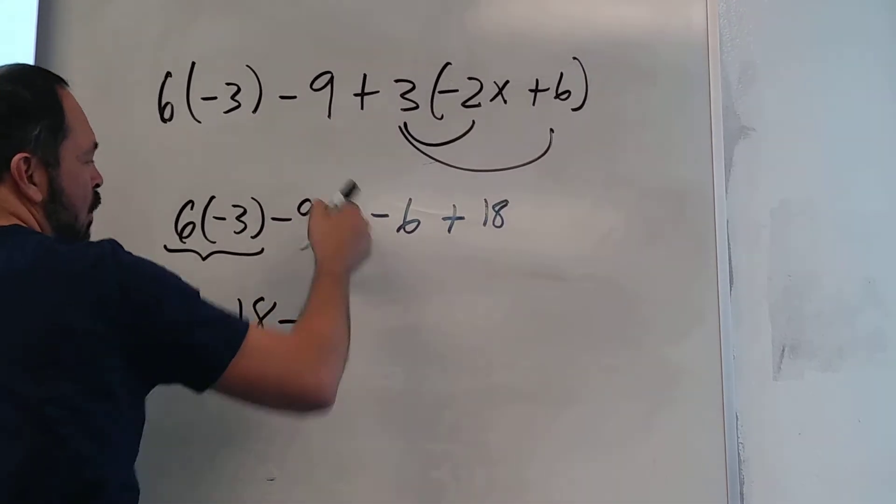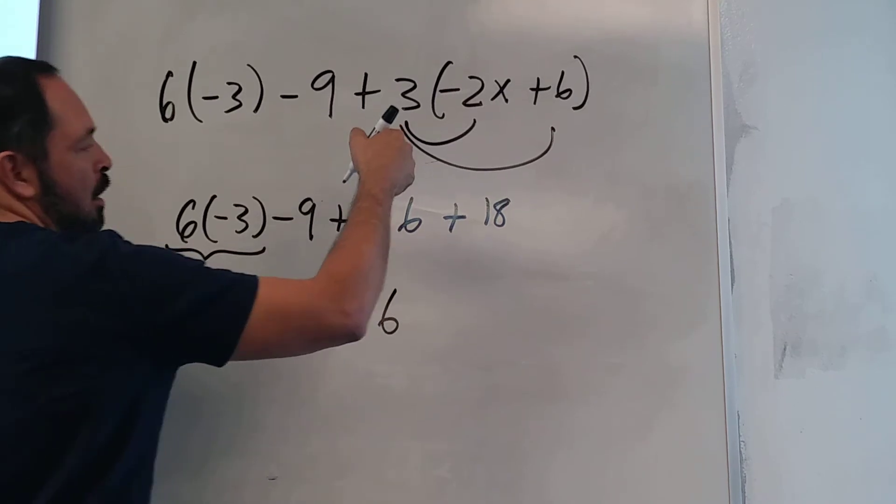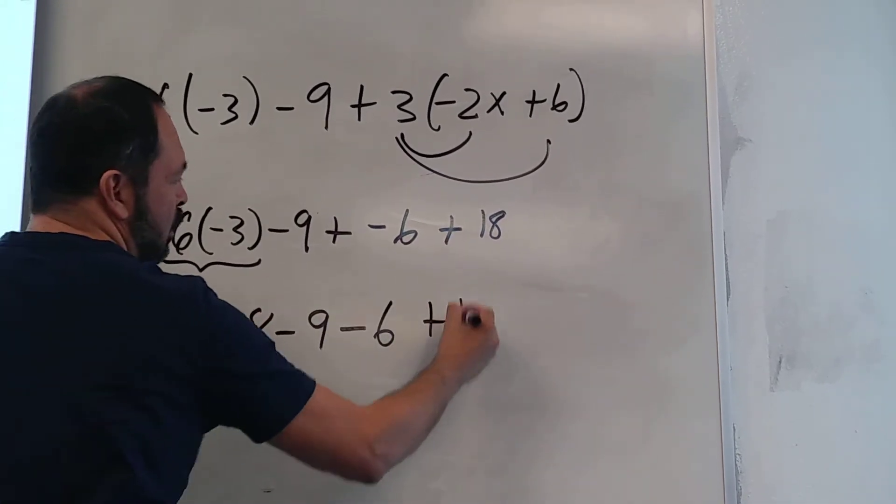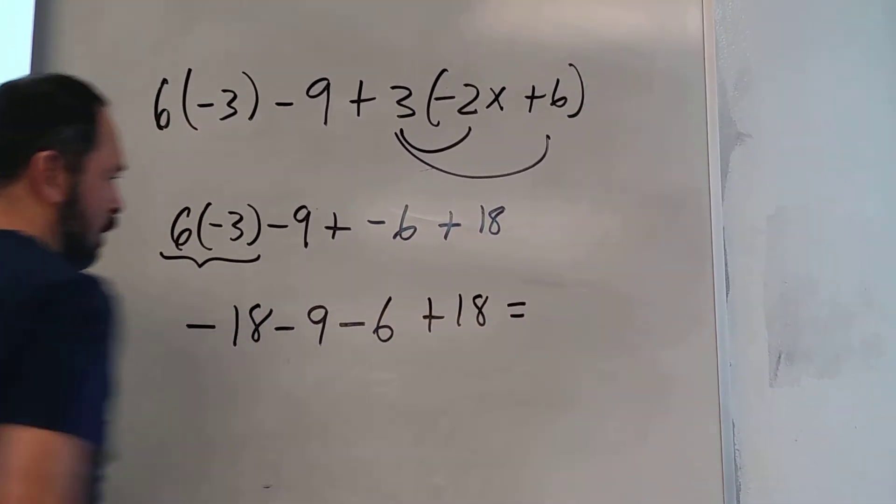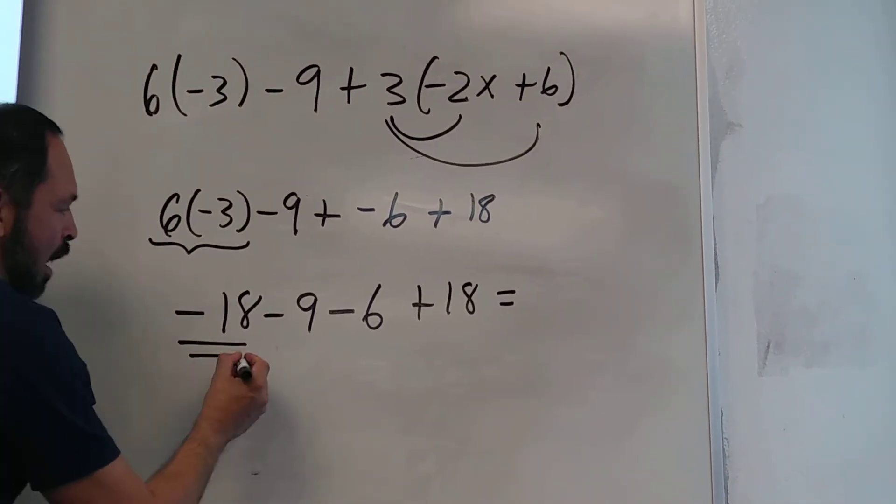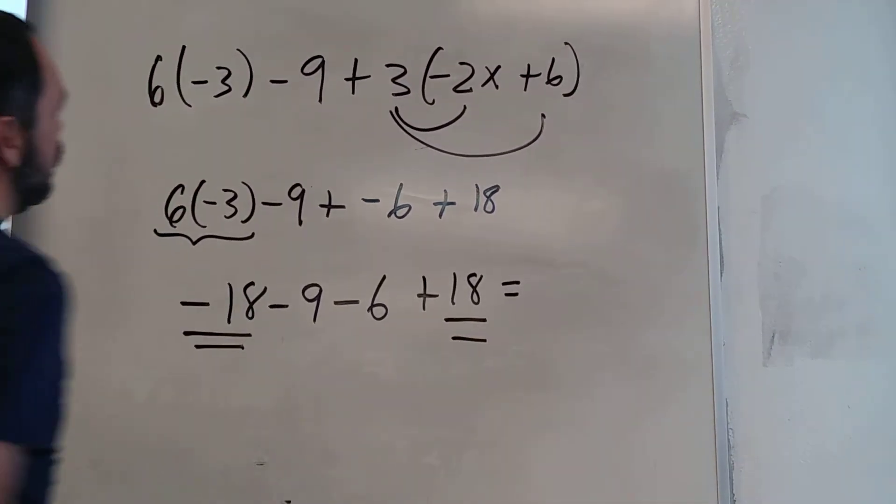I think I want to write this as minus 6 instead of plus negative 6 plus 18. The easiest thing to do here is to combine this term with this term.